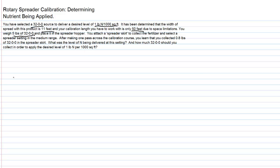So let's first determine our area within the calibration course. That's 11 feet in fertilizer width spread times 50 feet which is our course length. 11 times 50 equals 550 square feet in our calibration area.